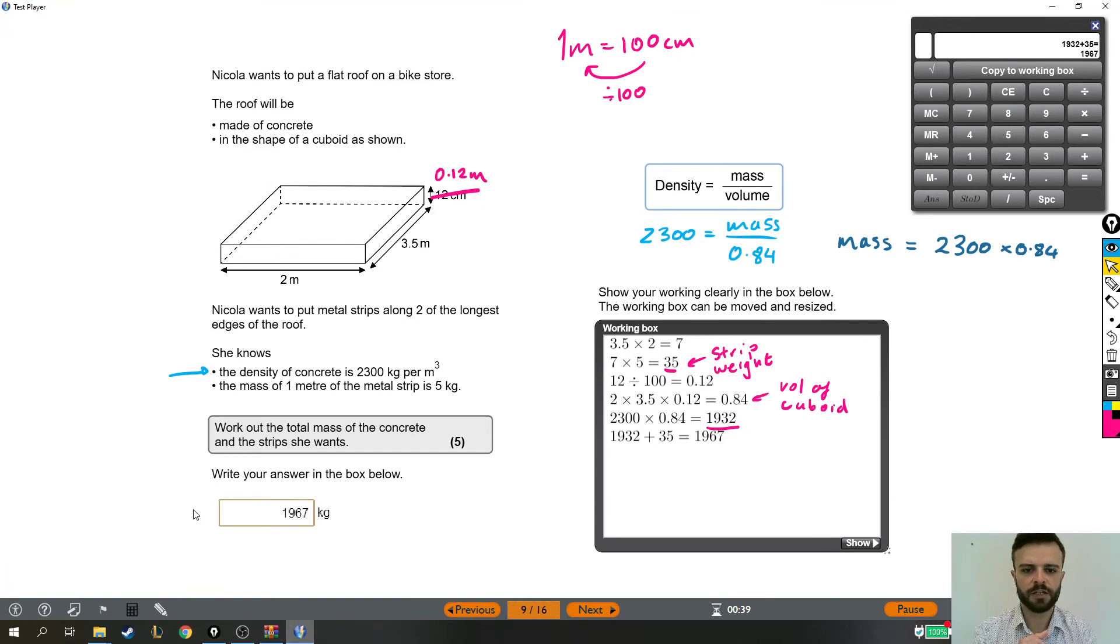So lots of that question, it's a tricky one. It's a hard question. But my advice is always to try and find the things that you can do. So working out the weight of the strips, really quite straightforward. The strips are on two of the longest edges. We know how long the edges are. So that's seven meters that you'll need. And we know that one meter is five kilos. And if one meter is five kilos, then seven meters is seven times as much. So 35 kilos.